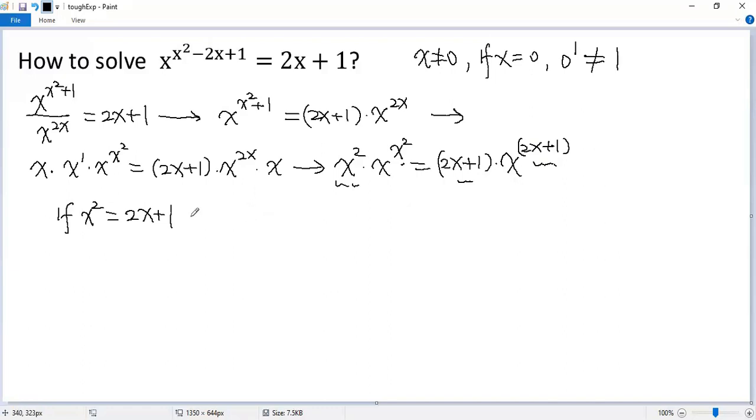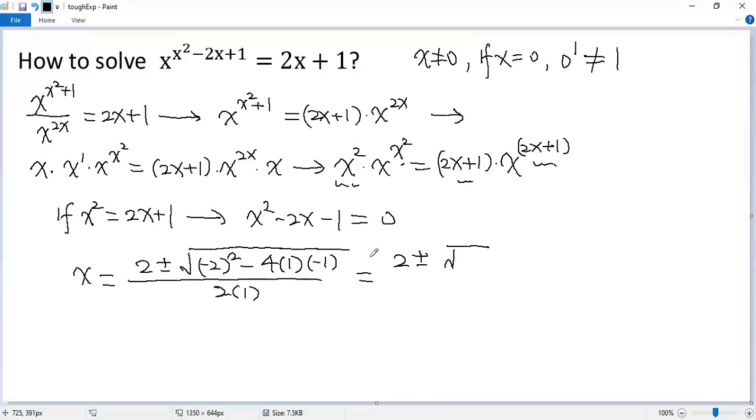Both sides subtract 2x minus 1 so we get x squared minus 2x minus 1 equals 0 and then we use quadratic formula so we get x equals negative b which is 2 plus minus square root of b squared minus 4ac so 4 times 1 times negative 1 divided by 2 times 1. That's 2 plus minus square root of 4 plus 4, 8 over 2. Square root of 8 is 2 times square root of 2 cancel to finally we get 1 plus minus square root of 2.